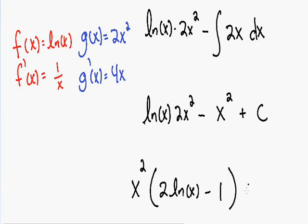And we can't forget to add our plus C. And this is our final answer. Using integration by parts, we integrated and we got x squared multiplied times 2 times the natural log of x minus 1 plus C. I hope you enjoyed this. Check out my integration by parts calculus quiz if you want to get some extra practice with these problems. And I will see you in my next video.